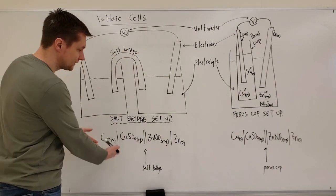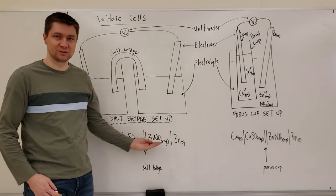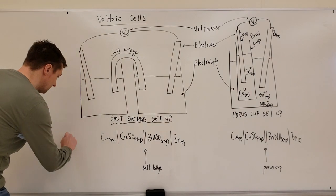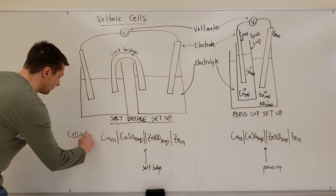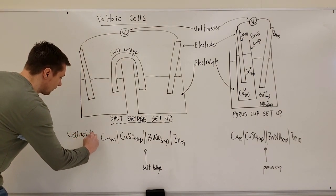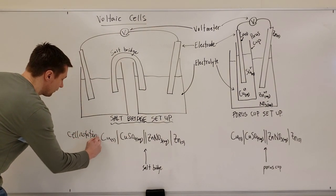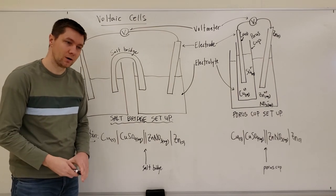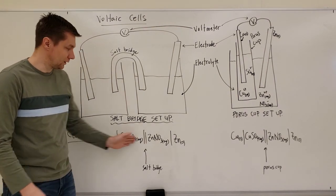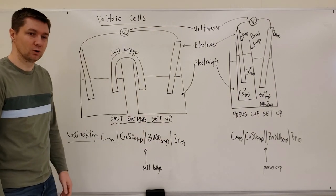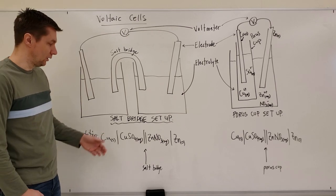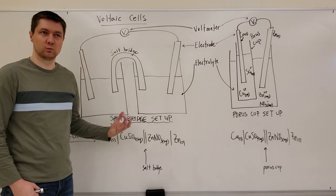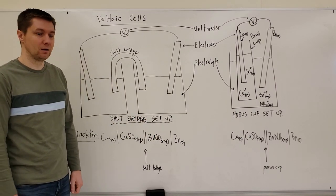Underneath the diagrams is something called cell notation, which shows on paper what the voltaic cell will look like, which electrodes are which, and what solution each electrode is sitting in.